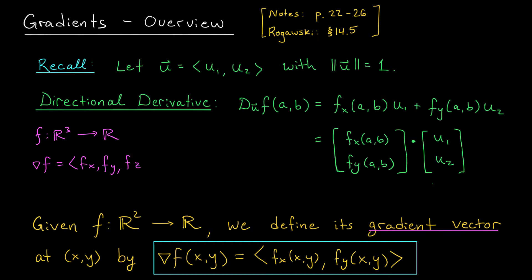Using this new notation for our gradient, we can write our directional derivative formula very compactly as del f at (a,b) dot u vector. Pretty nice, huh? Very simple and very easy to remember. Let's check out some other formulas that we've seen so far that can be simplified using the gradient vector.